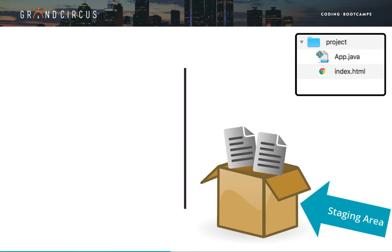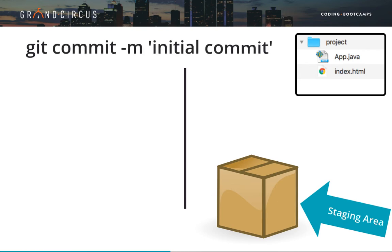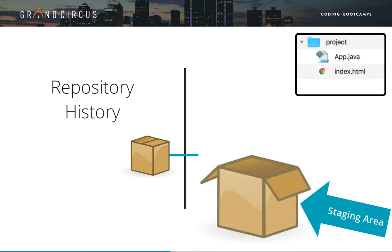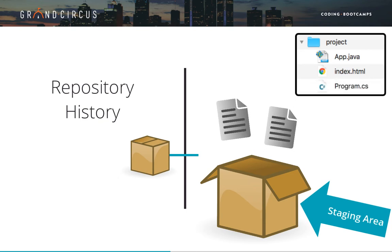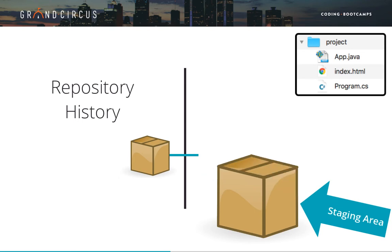The next step is to save the commit — this means sealing the box. We use the git commit command. When a commit is made, it is added to the historical timeline of our repository, and the staging area is reset with a new box for the next snapshot. We'll continue making changes to files in the working directory, and eventually it's time for another snapshot. Again, we add files to the staging area, and again we seal the box with a commit. Another snapshot is added to the history.